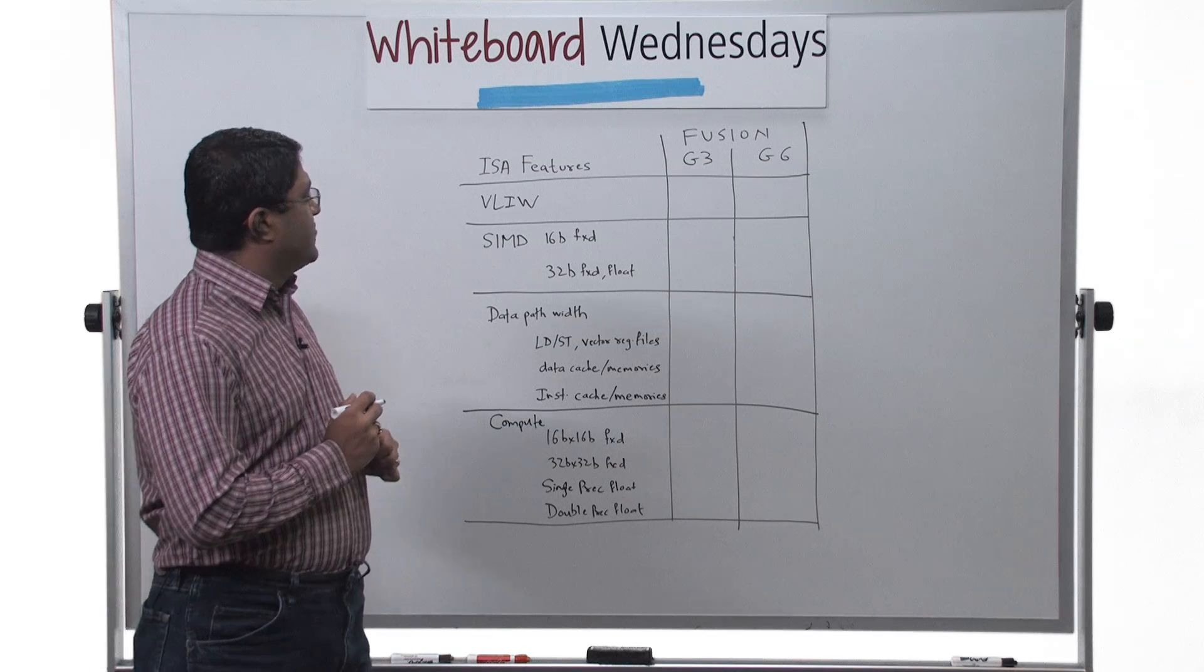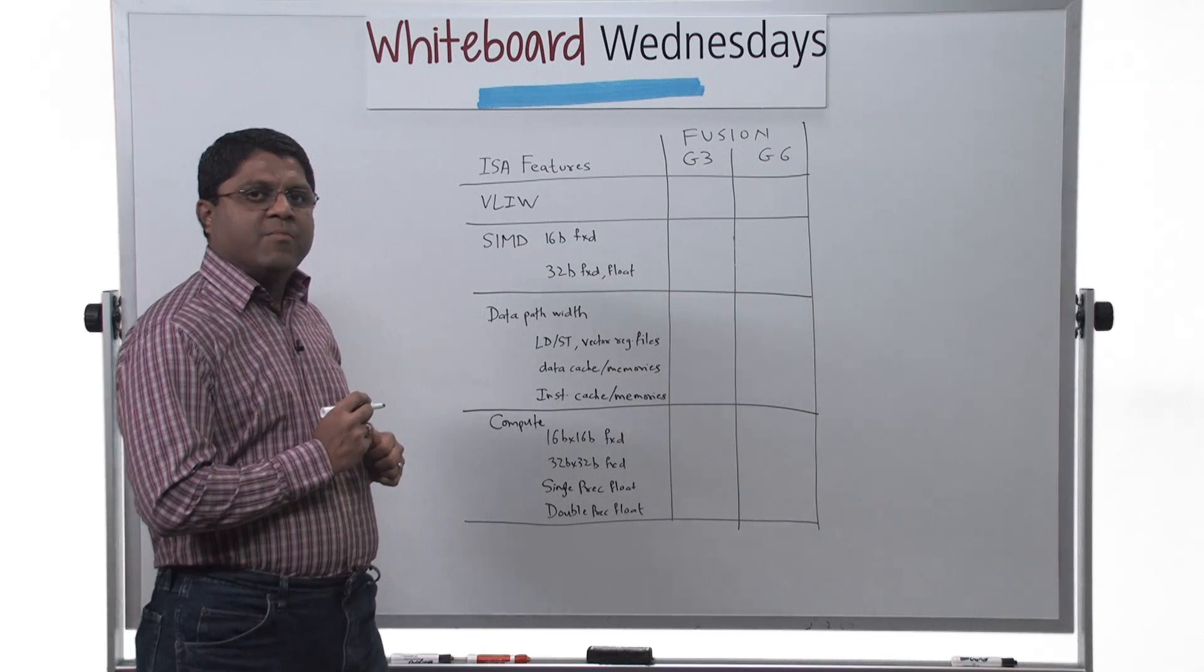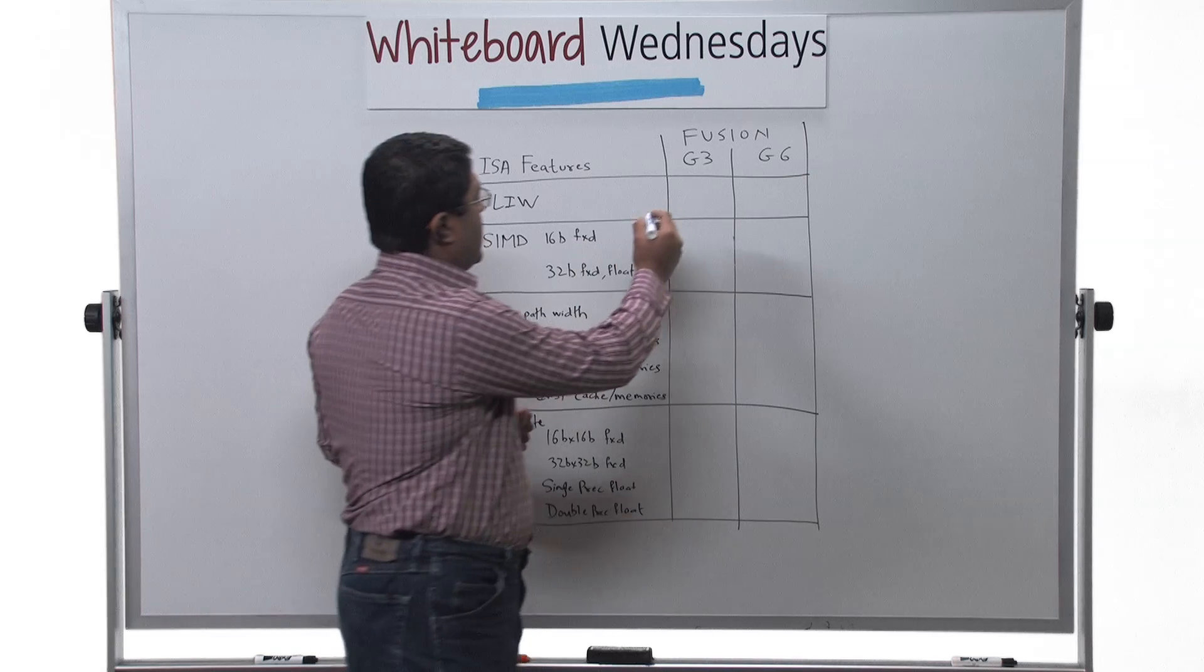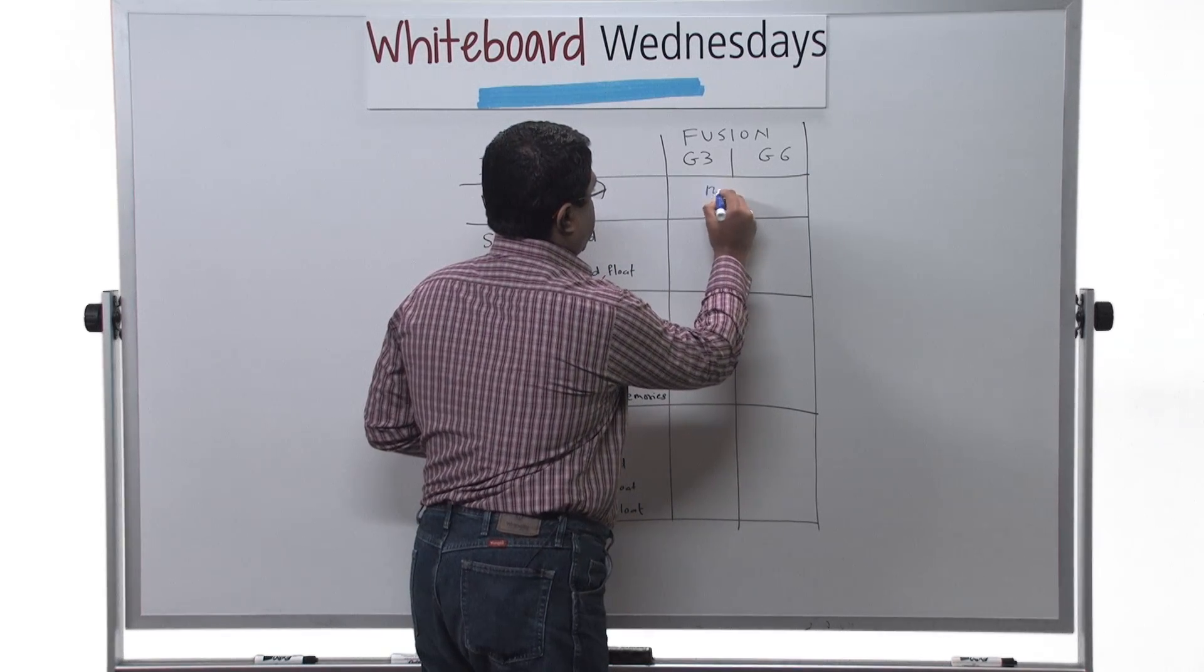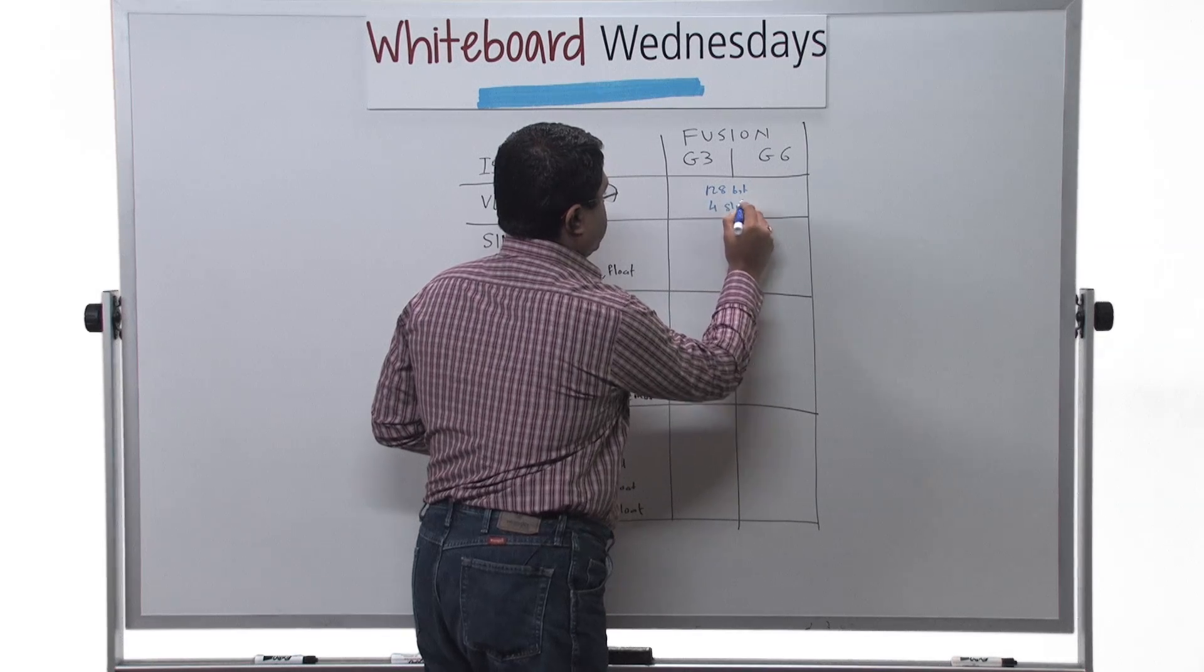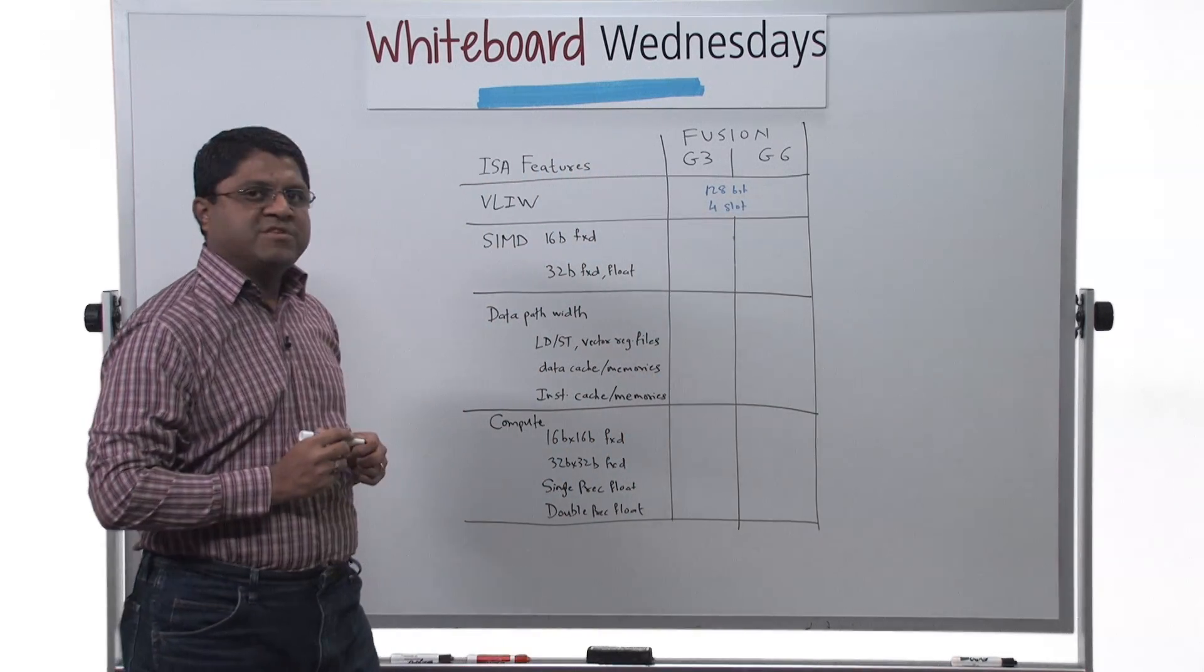The Fusion family is a family of VLIW vector processors. Both of them are 128-bit four-slot VLIW machines.